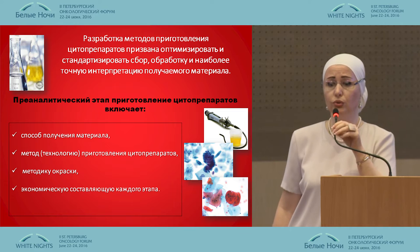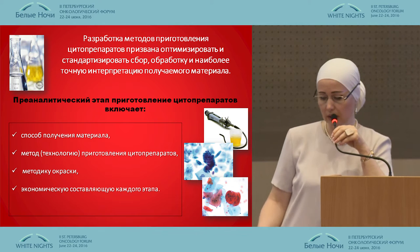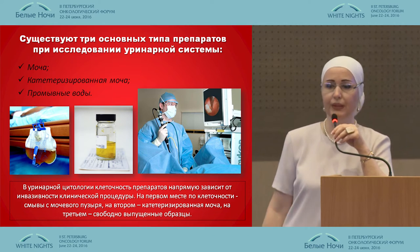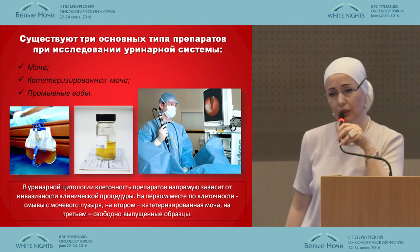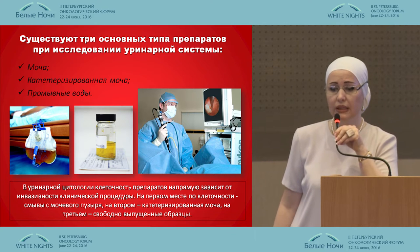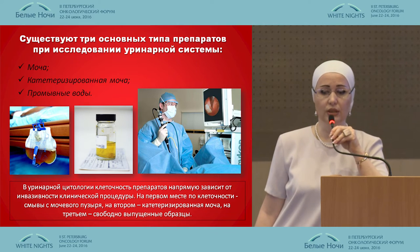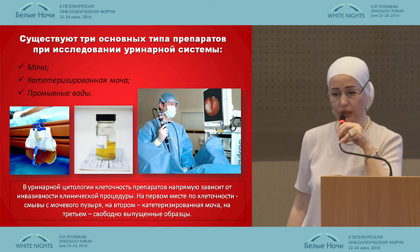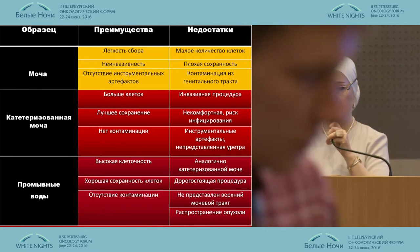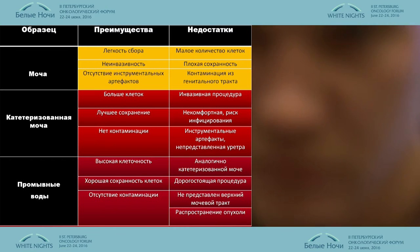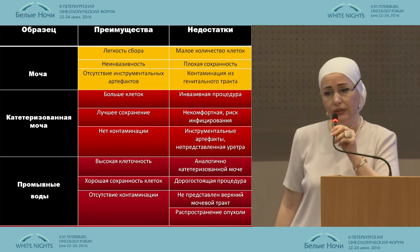The preparation of urine and swabs starts with the method of coloring, method of mixture, and the extraction from each stage. There are three main types: urine, catheterized, and wash water. The cell grade of the microslide depends on the type of the substance. Here you can see the disadvantages and advantages of each type of liquid.